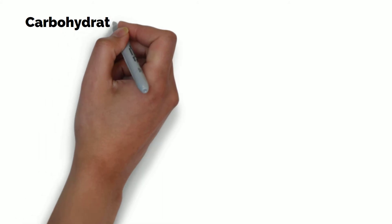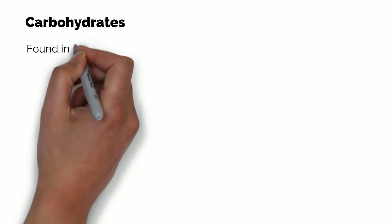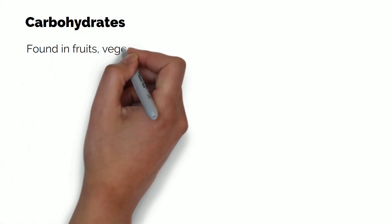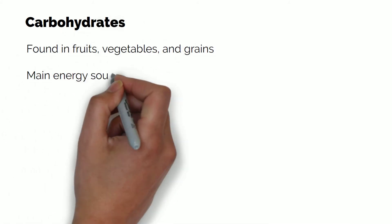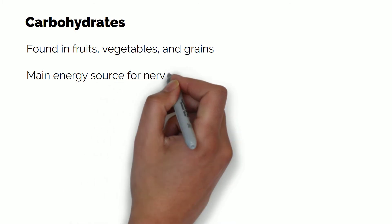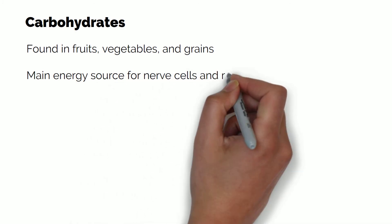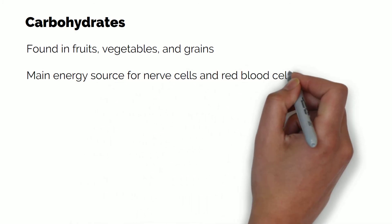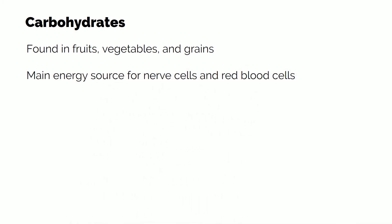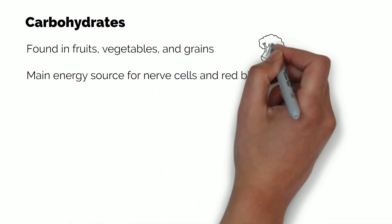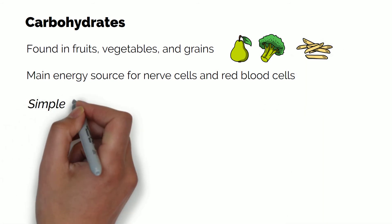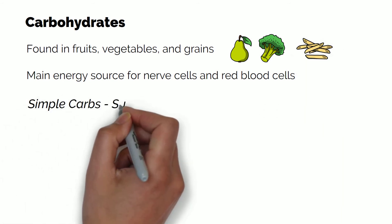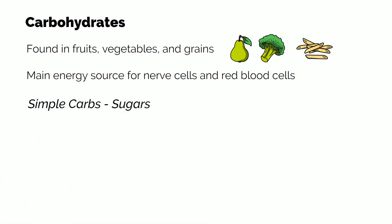Carbohydrates are usually found in fruits, vegetables and grains, and are the main energy source for certain types of cells in our bodies, such as nerve cells and red blood cells. Carbohydrates can be divided into two groups: simple carbohydrates and complex carbohydrates.